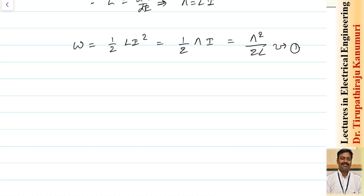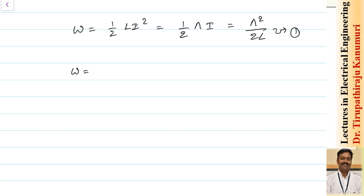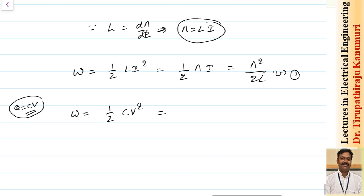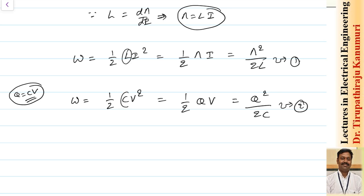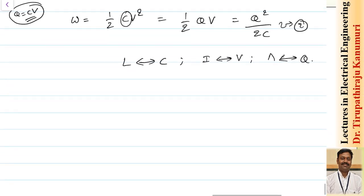The energy stored in a capacitor is ½·C·V², and since q = C·V, this can be written as ½·q·V or q²/2C. Comparing with the inductor: L corresponds to C, current I corresponds to voltage V, and flux linkages Ψ correspond to charge q.